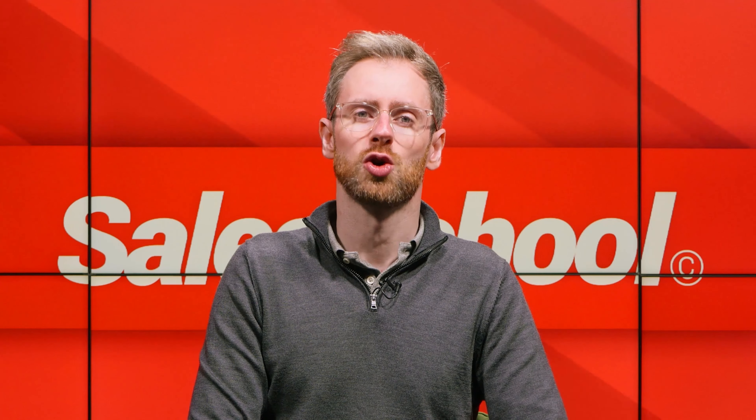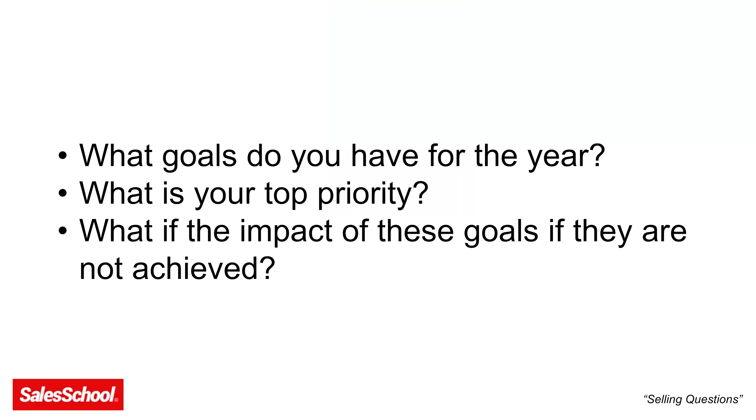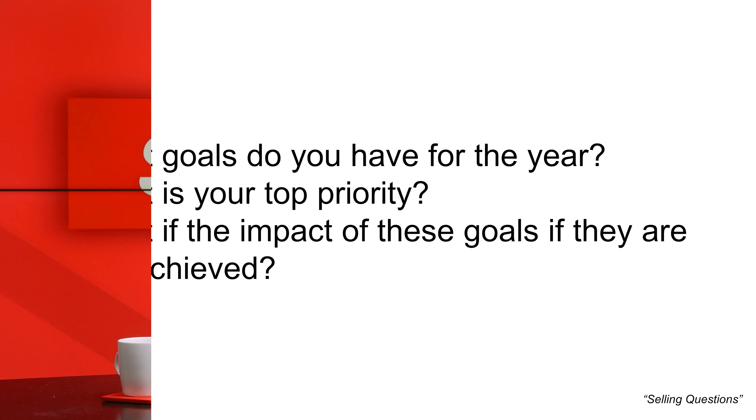At the top of the funnel, we have uncover questions. We use these because at this point in the conversation we're just trying to reveal information that allows us to see if our product is a good fit for the potential partner — we're trying to qualify them. Examples here could be: what goals do you have for the year? What is your top priority? What is the impact of these goals if they're not achieved?